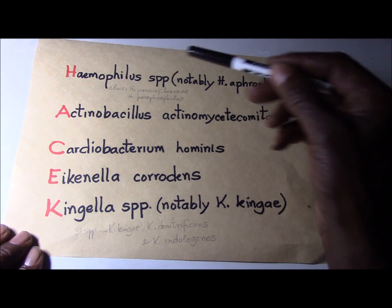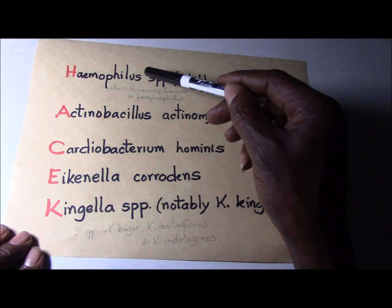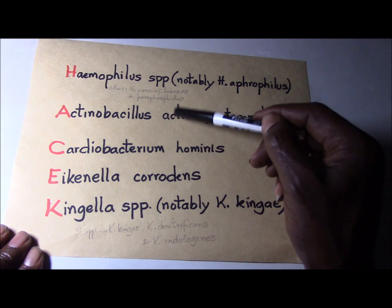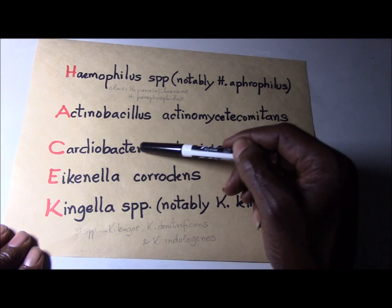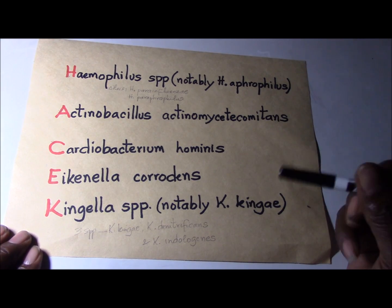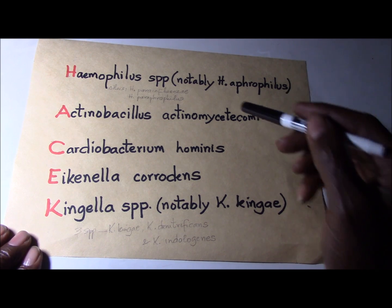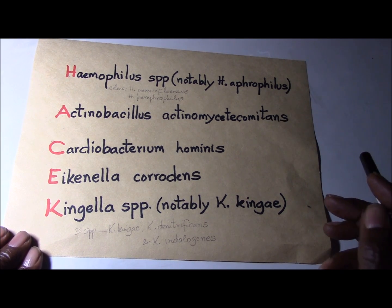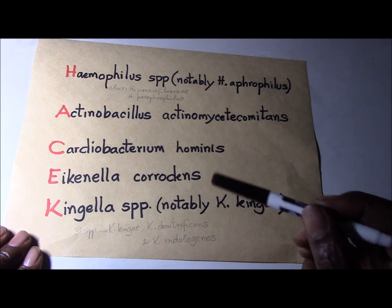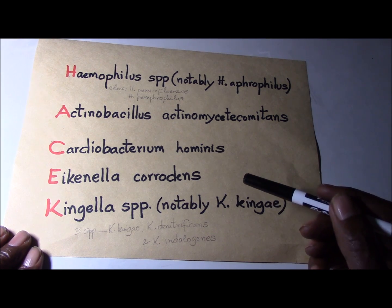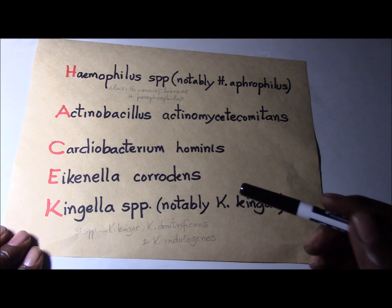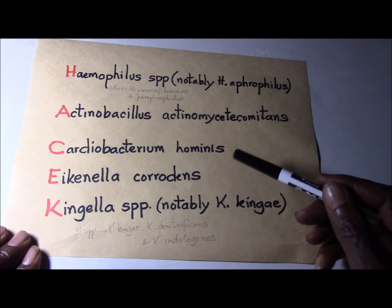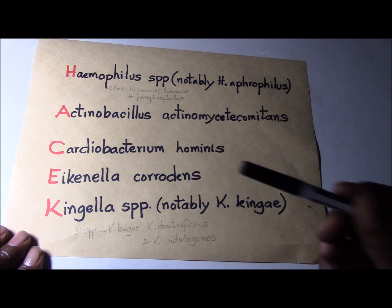Note that other than the Haemophilus species and Kingella, the other entries represent the actual species involved. There is no shortcut to memorizing these — my recommendation is to use flashcards, which will enable you to review them from time to time and remind yourself of what you may be missing.